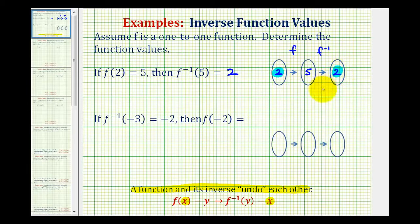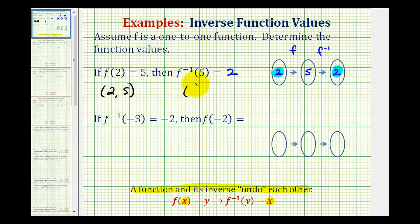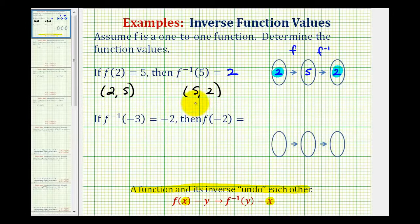One more thing we should notice: if f of two equals five, f contains a point with an x-coordinate of two and a y-coordinate of five. And if f inverse of five equals two, f inverse contains the point with an x-coordinate of five and a y-coordinate of two. Notice how the x and y coordinates have been switched, which is the reason why the graph of f and f inverse are symmetrical across the line y equals x.